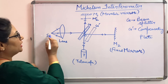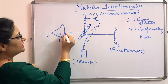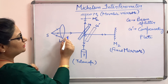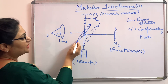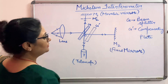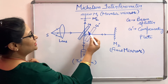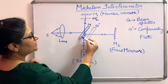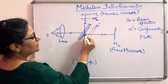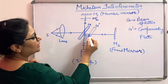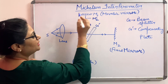In this device, light from a source is well collimated through a lens and is made to incident on a glass plate. This glass plate is the beam splitter whose function is to divide the amplitude. This beam splitter is partially silvered from the back. When the light is incident on this beam splitter, a part will be transmitted and a part will be reflected.